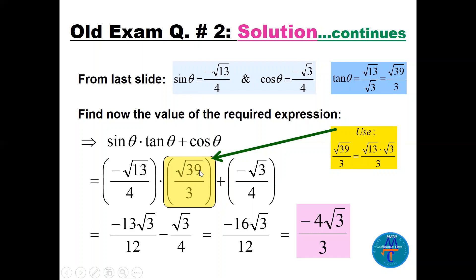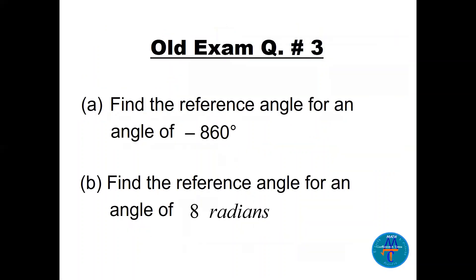Substituting: sin(θ) = -√13/4, tan(θ) = √39/3 = √13·√3/3. Multiplying gives -13/(4·√3)·... simplifying with √13 terms: numerator yields -13 and -12, denominator 3·4. Then subtract √3/4. Finding the LCD and multiplying, the final answer is -4√3/3.